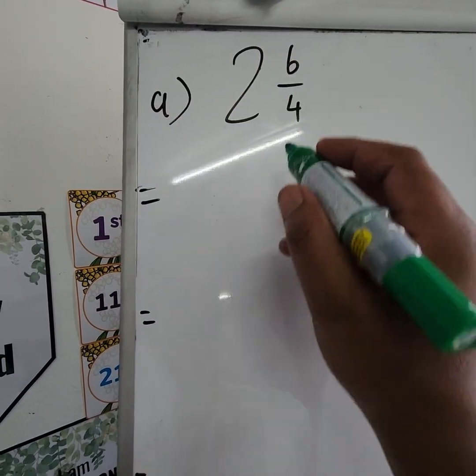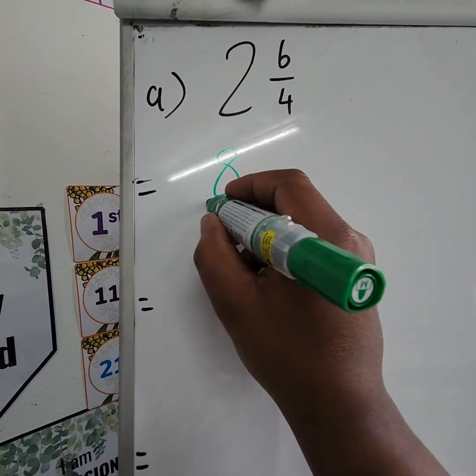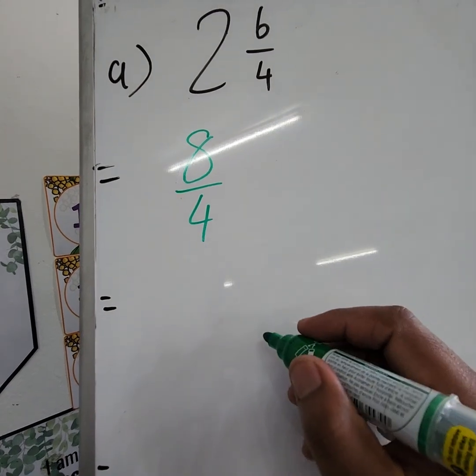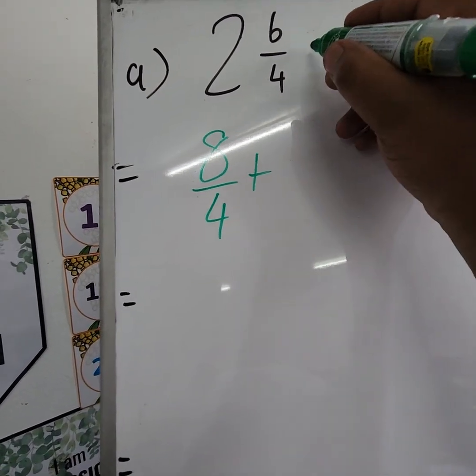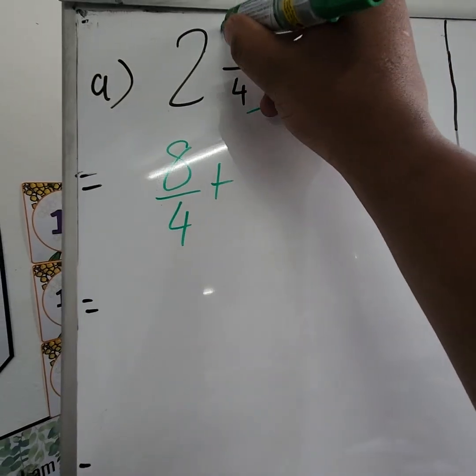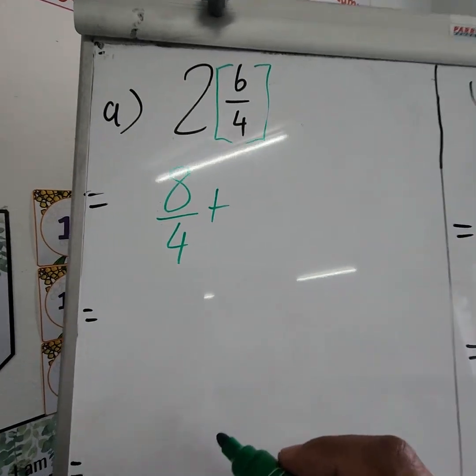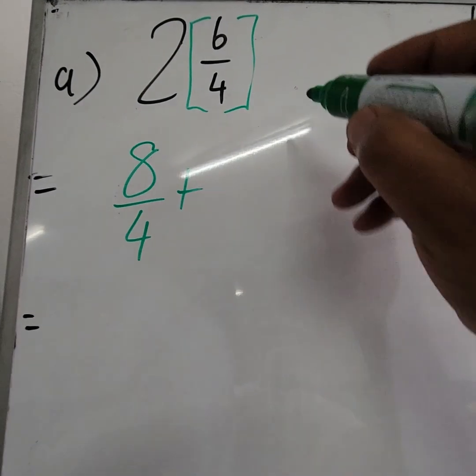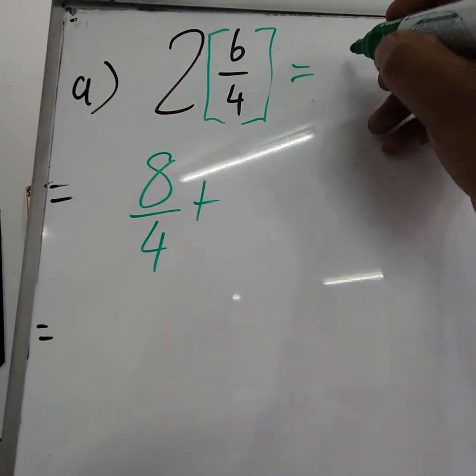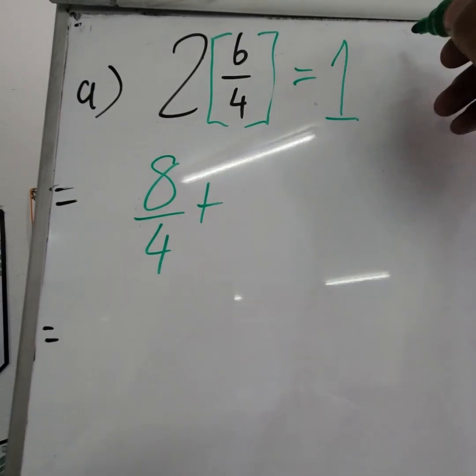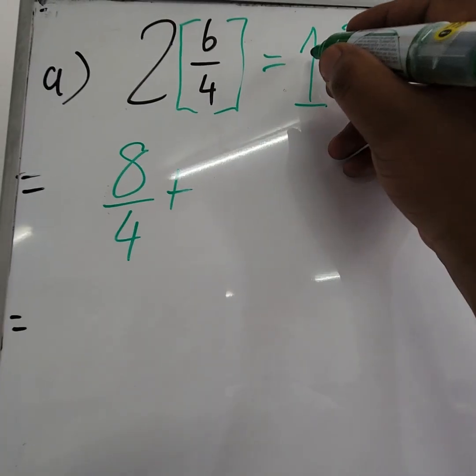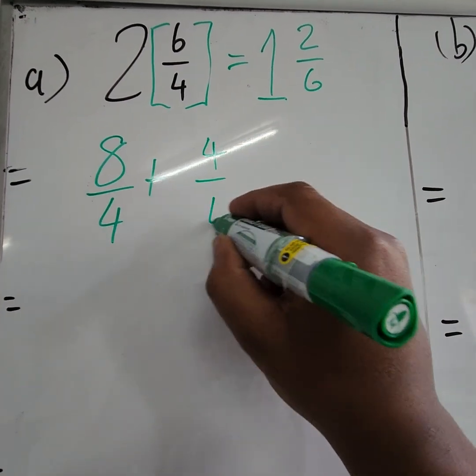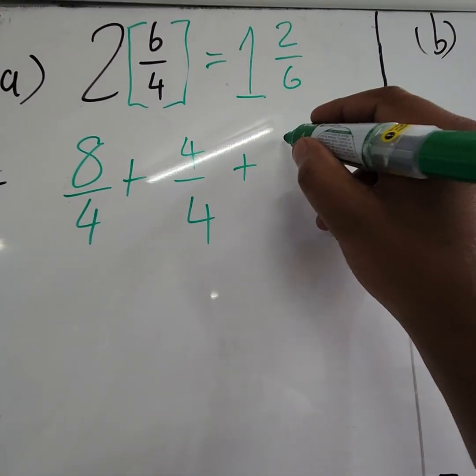Multiply them and we get eight, and obviously we will have our four as our denominator. Then we need to add it to 6/4. Since 6/4 is also an improper fraction, we need to first make it into a mixed number. So four goes into six once, and then the remainder is 2/6. If we break down this one into a fraction, it will give us 4/4, then the remainder is this 2/6.